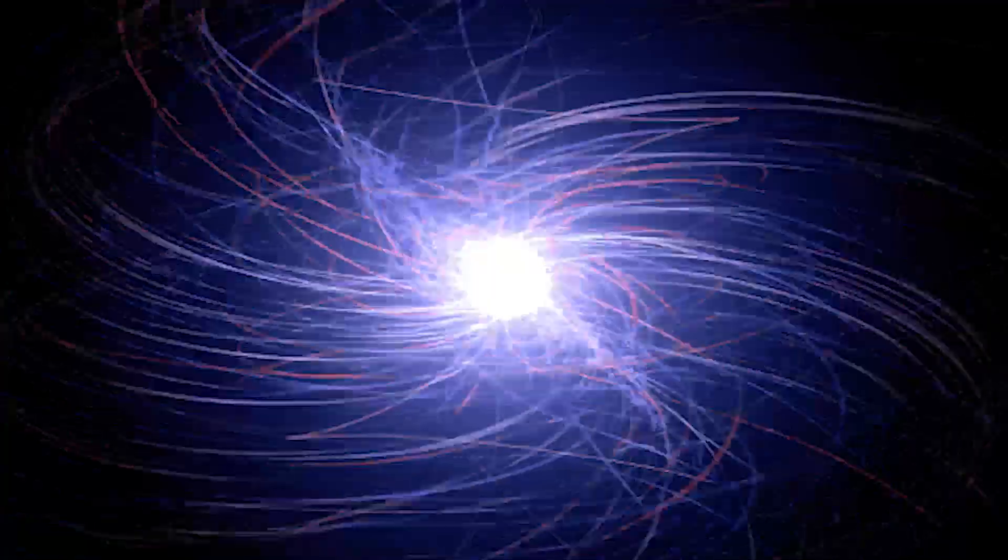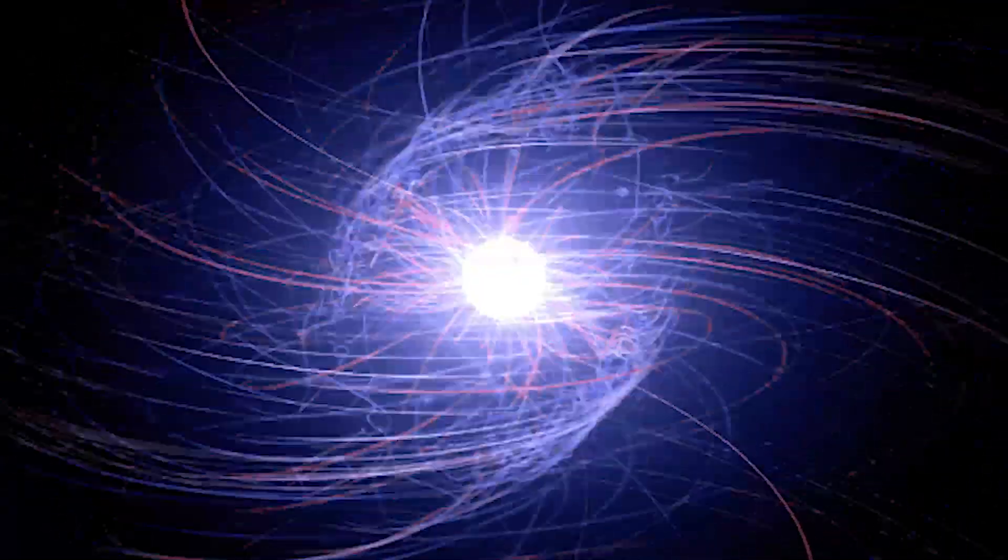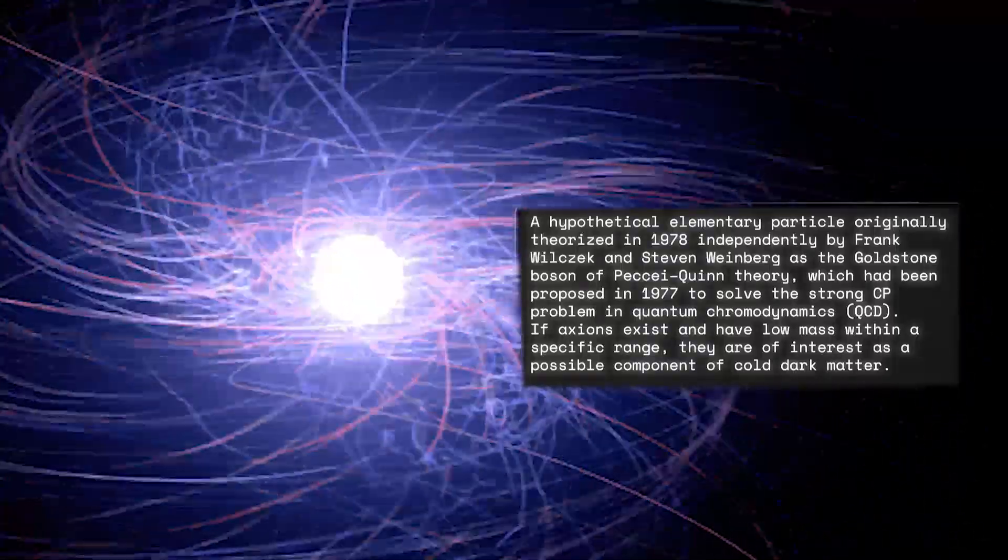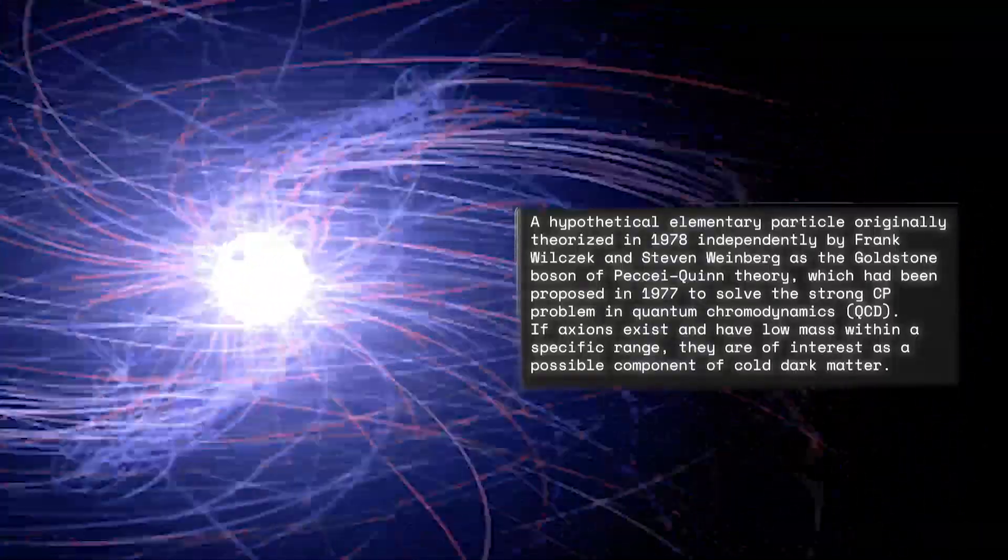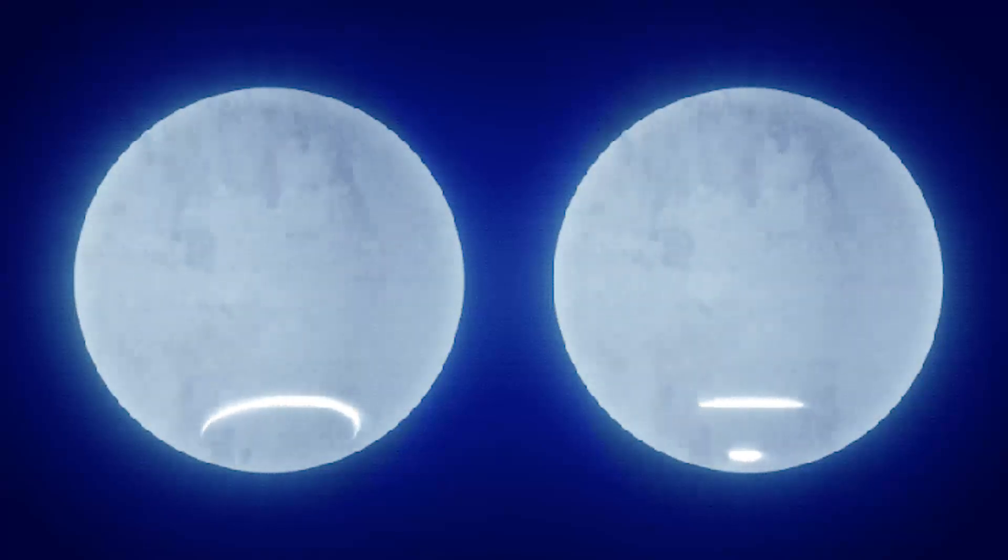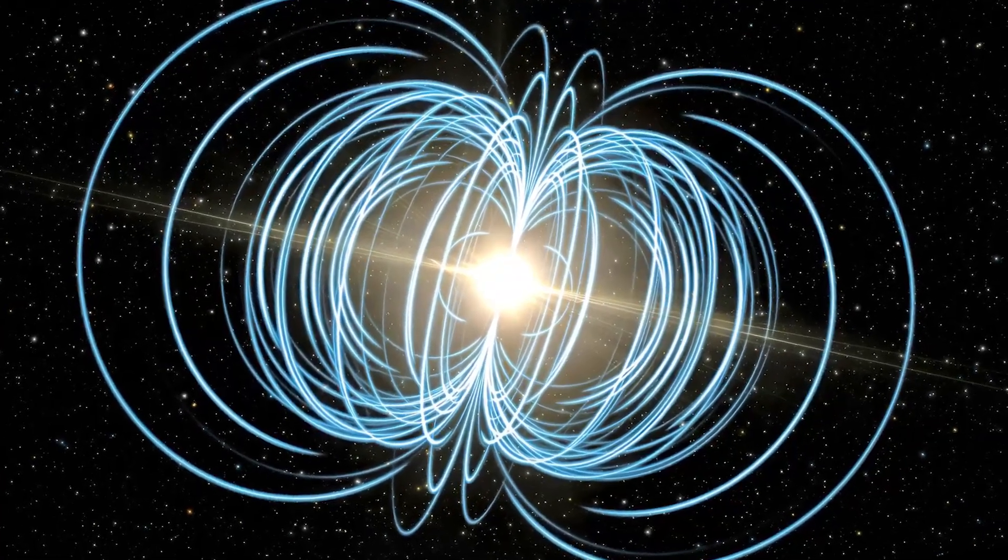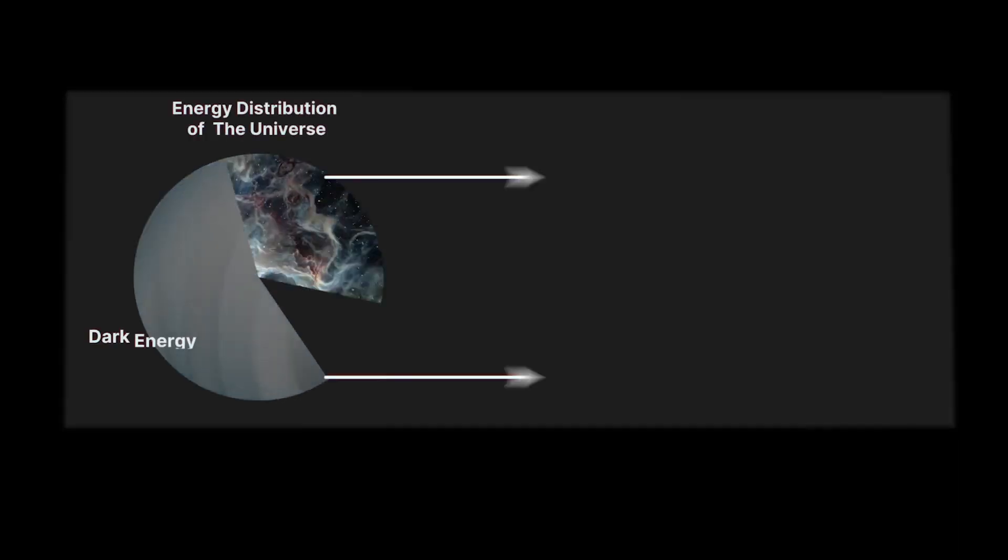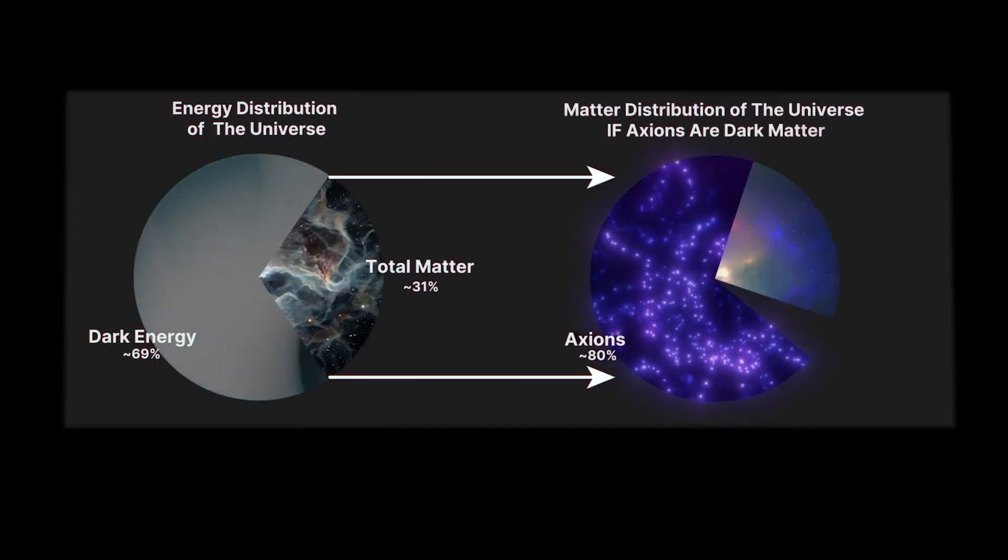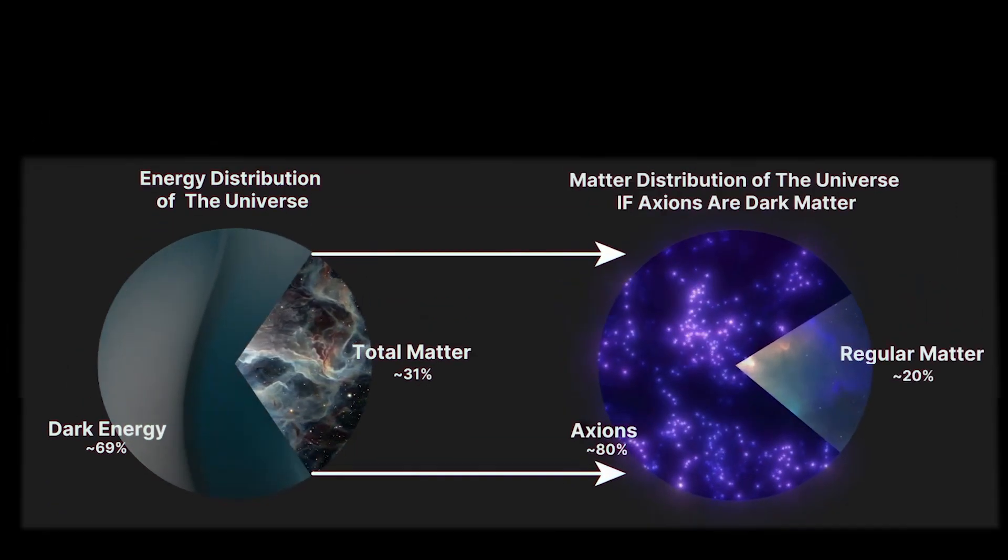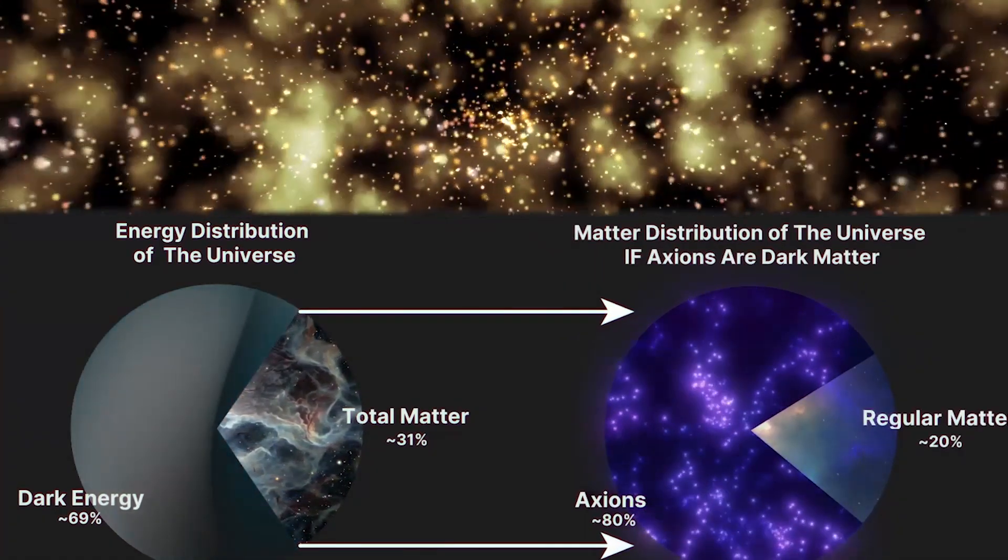Axions are especially popular because they're great dark matter candidates, and that's because they're extremely elusive. They interact with the electromagnetic field only very weakly. But axions can only be dark matter if they make up around 80% of the mass of the universe, and that's only possible if they were produced in pretty ridiculous numbers right after the Big Bang.